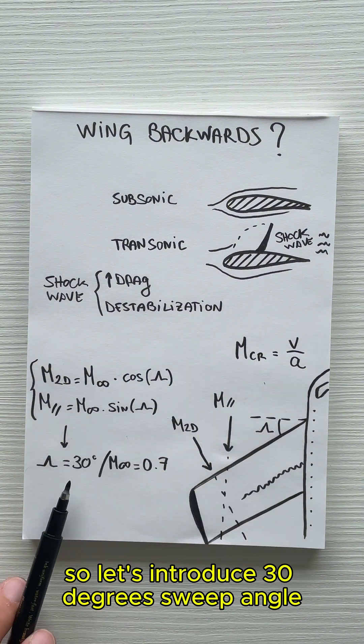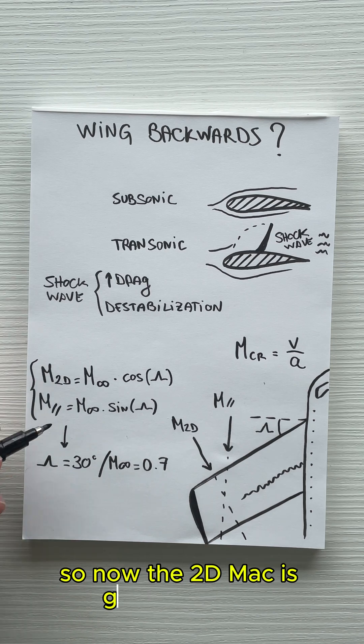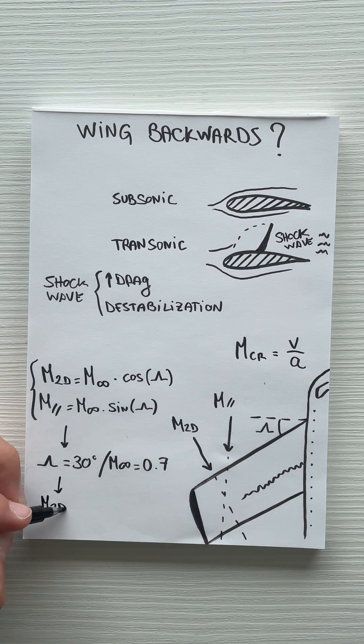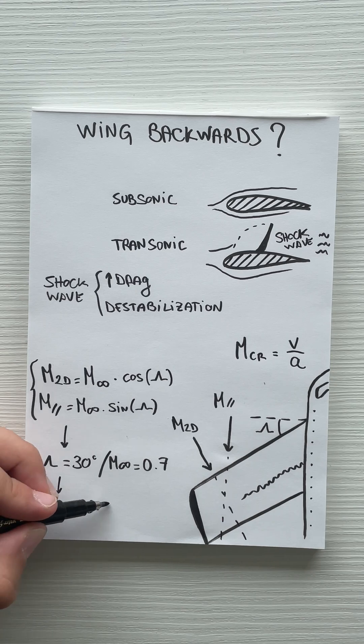Let's introduce 30 degrees sweep angle. So now the 2D Mach is going to be 0.61.